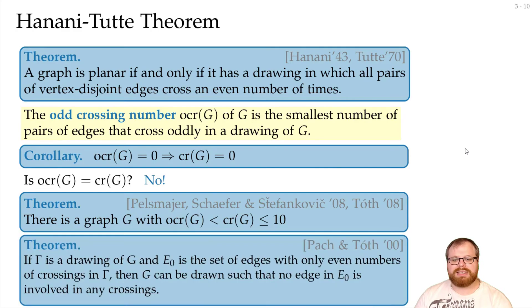But at least the second part we can do. That's what Pach and Toff showed. If we have a drawing and we have some edges that only have even numbers of crossings, so those edges cross every other edge an even number of times, then we can redraw it such that none of these edges are involved in any crossings. So for those edges where we only have even crossings, there we can remove them.